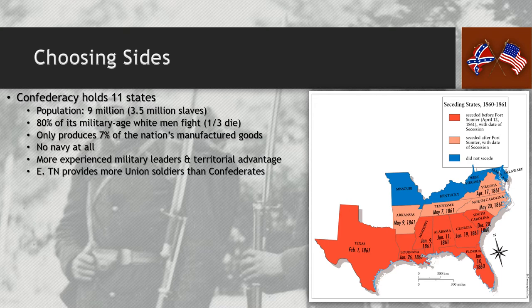Not every Confederate state is 100% loyal, though. Eastern Tennessee, for example, ends up producing more Union soldiers than Confederate soldiers, and borders Kentucky, which stays part of the Union. One state is even created out of Union loyalty after Virginia secedes in April of 1861 — 39 counties in the northwestern portion of the state decide to stay loyal to the Union, separating off in October and forming West Virginia.